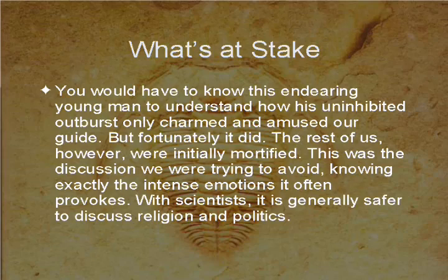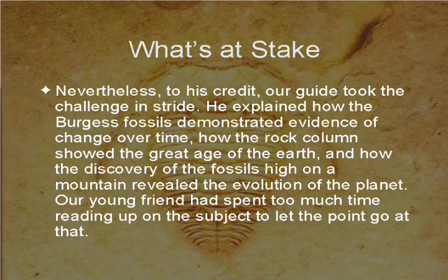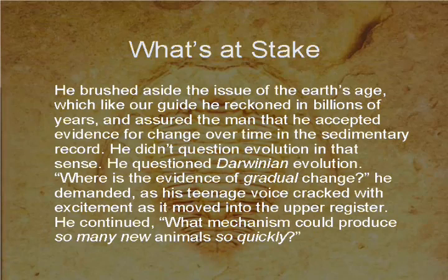With scientists, it is generally safer to discuss religion and politics. Nevertheless, the guide took the challenge in stride. He explained how the Burgess fossils demonstrated evidence of change over time, how the rock column showed the great age of the earth, and how the fossils high on a mountain revealed the evolution of the planet. The young friend brushed aside the issue of the earth's age — which he accepted as billions of years — and pressed: 'Where is the evidence of gradual change? What mechanism could produce so many new animals so quickly?'